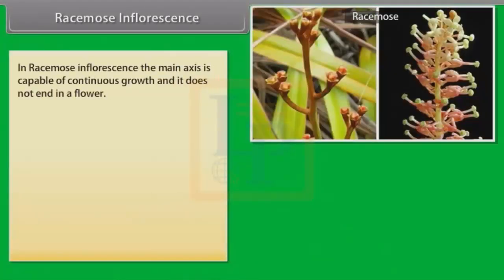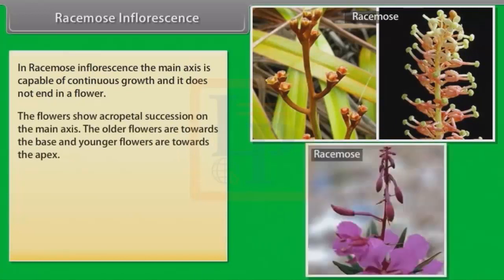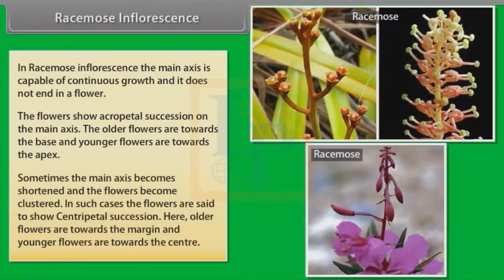In Racemose inflorescence, the main axis is capable of continuous growth and it does not end in a flower. The flowers show acropetal succession on the main axis; older flowers are towards the base and younger flowers are towards the apex. Sometimes the main axis becomes shortened and the flowers become clustered; in such cases the flowers show centripetal succession, where older flowers are towards the margin and younger flowers are towards the center.